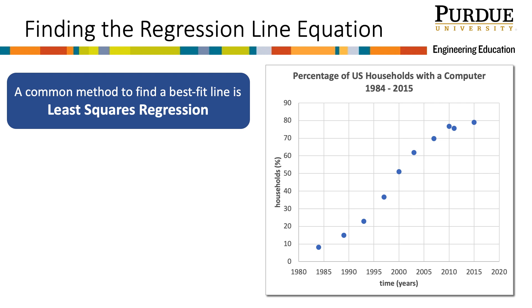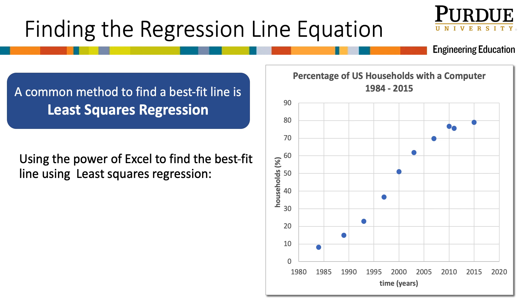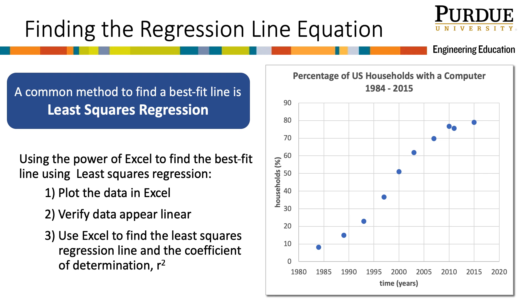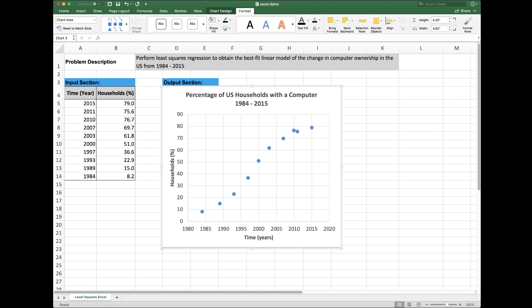A common method to find a best fit line is least squares regression. The content of this module focuses on the simple mechanics of how to do this in Excel. This involves plotting the data, verifying that the data appear linear, then using built-in Excel features to find the equation of the best fit line and the r-squared value. So let's just try to do this in Excel.